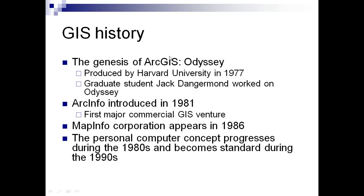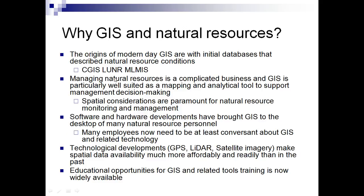ArcGIS is not just proprietary software — it has changed the way we look at GIS. It was produced by Harvard University in 1977, and graduate student Jack Dangermond worked on this. ArcGIS was introduced in 1981 and was a major GIS venture. MapInfo came in 1986, the PC concept progressed during the 1980s, and became standard during the 1990s, giving us the GIS tools available to us today.